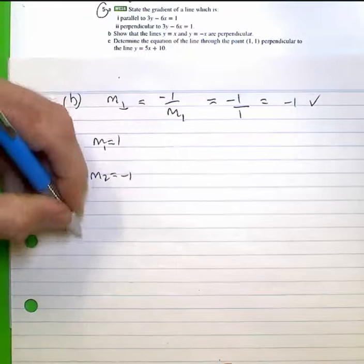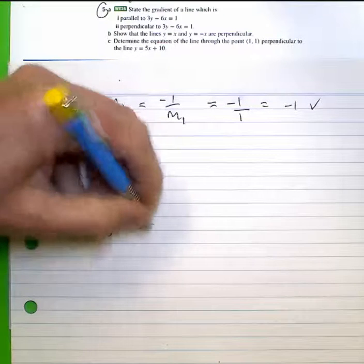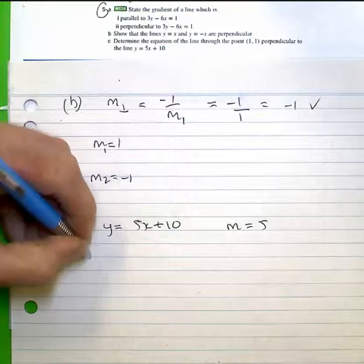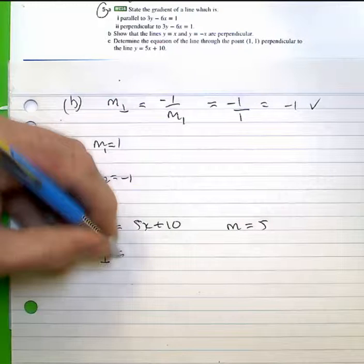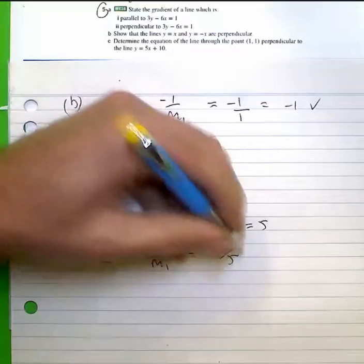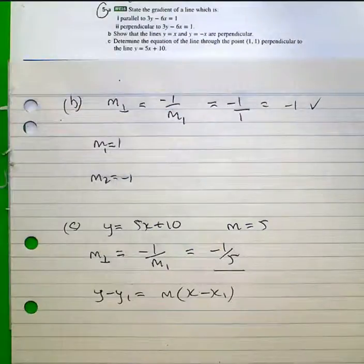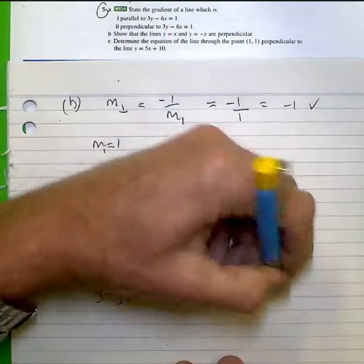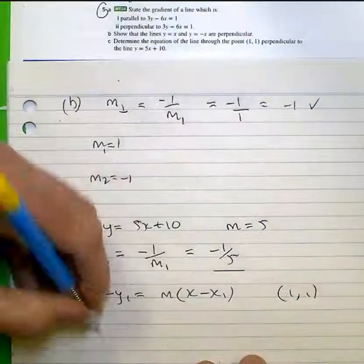Now in the case of c, you've got the function y equals 5x plus 10. The gradient is 5, perpendicular, negative 1 over m or negative 1 fifth. So to find the equation, the function that goes through the point 1, 1, we simply plug it in.